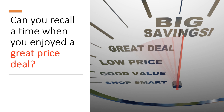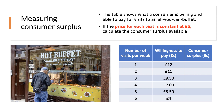The gap between the price you paid and what you would have been willing and able to pay is called consumer surplus. Think about an all-you-can-eat buffet in a city centre — the table below shows what a consumer is willing and able to pay for visits each week.